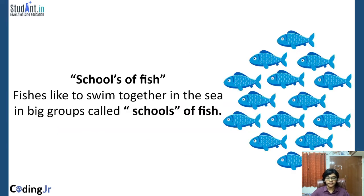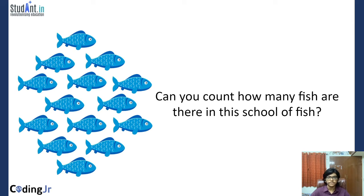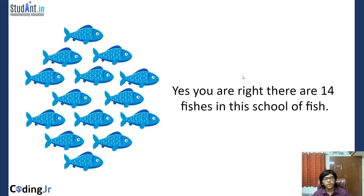A group of fish is called a school. So a large group of fish is known as a school of fish. Now in this picture, I want you all to count the number of fish. You can pause this video if you need to. There were a total of 14 fishes in this school of fish.